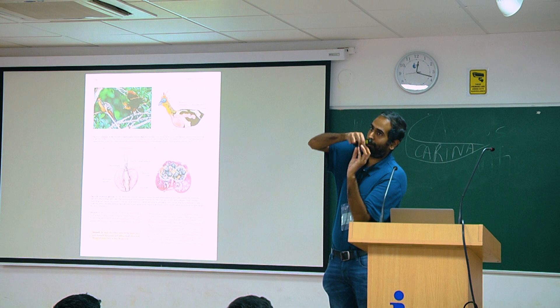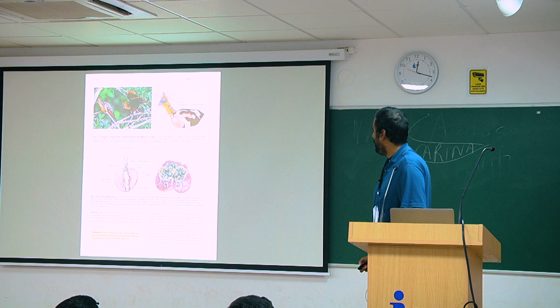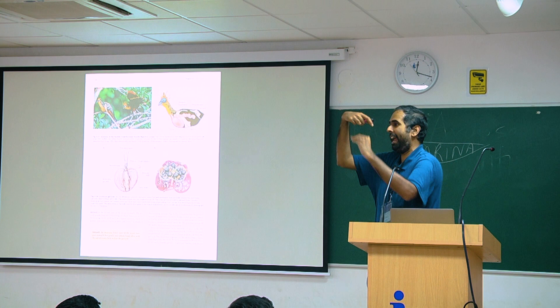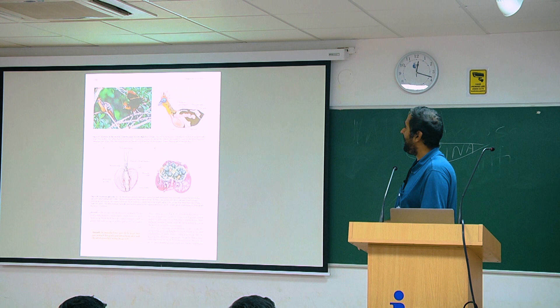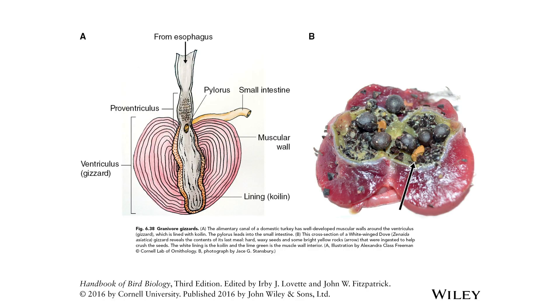Storks or pelicans in some cases — the young will stick their head right into the adult's beak and that's where they get their food from. The gizzard usually has stones and grit that help grind food up and process it so that the digestive system can handle it. You can see in this photo — this is a dove, or pigeon — that has some fruit and these little yellow bits are stones and grit that are part of the gizzard.